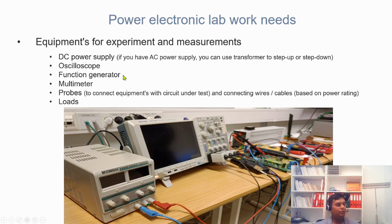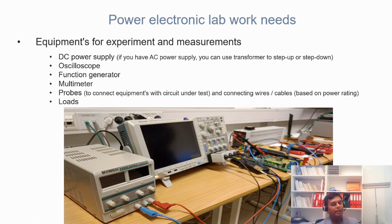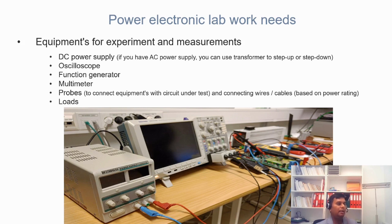You also need a function generator to generate different shapes, amplitudes, and frequencies of waveforms. A multimeter is also a very basic and essential piece of equipment. It can measure AC or DC voltage, current, resistance, and conductivity.